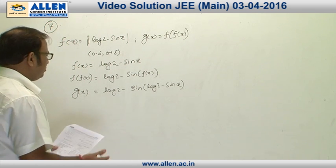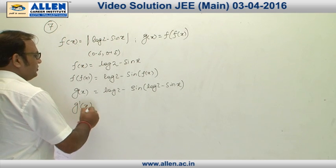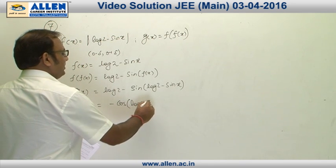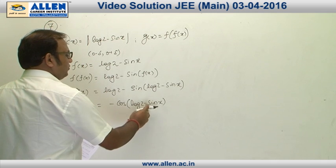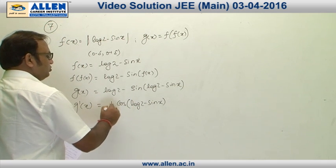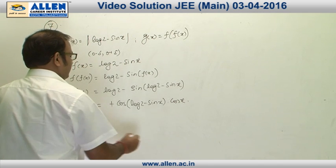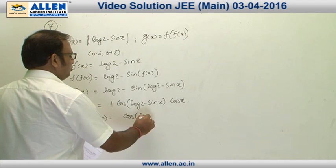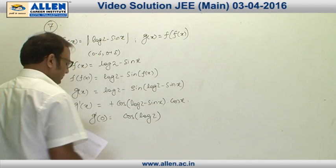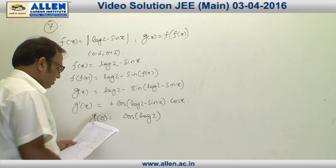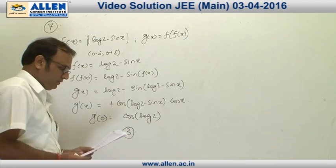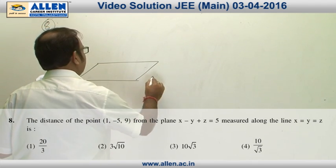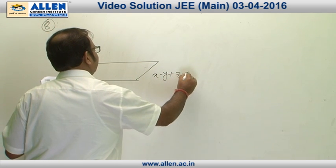Differentiating g(x), g'(x) = -cos(log(2 - sin x)) · (differentiation of the inner part) · (-cos x), which simplifies to +cos x · cos(log(2 - sin x)). Putting x = 0, g'(0) = cos(log 2). Therefore option 3 is correct.